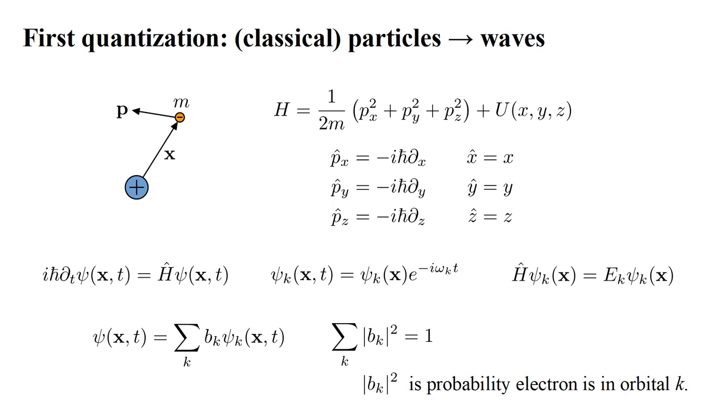Therefore, the magnitude squared b_k must be interpreted as the probability an electron is in the k-th spin orbital. And radiative transitions must occur in quantum jumps: at one moment an atom is in a high-energy state, the next moment it's in a low-energy state, and a photon has been created. As discussed in the first video of this series, one goal of quantum field theory is to represent this quantum jump as the destruction of a high-energy electron and the simultaneous creation of a low-energy electron and a photon.